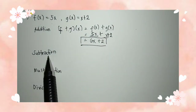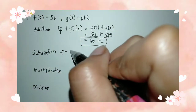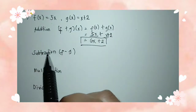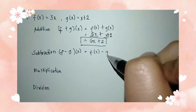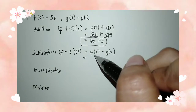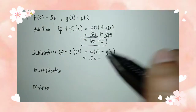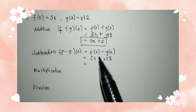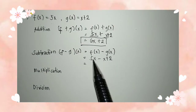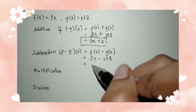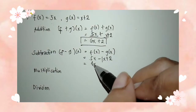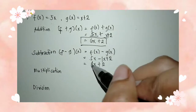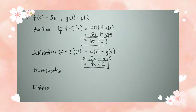Let's move on to subtraction of functions. We have f minus g of x is equal to f of x minus g of x. So we have f of x is equal to 5x minus g of x is equal to x plus 2. We have 5x minus x since they both have x as variable. 5x minus x is equal to 4x — when there's no number with the variable, it is automatically 1, so 5 minus 1 is 4. Copy the plus 2. That's why 4x plus 2 is the answer.